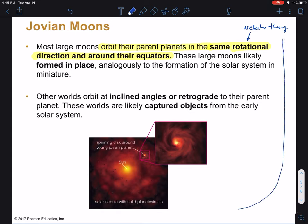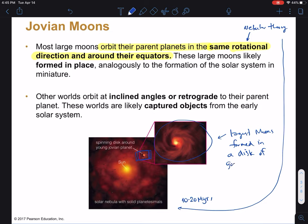You can see this picture showing the solar nebula with planetesimals forming around it. This would have been maybe about 10 to 20 million years after the sun formed. If we zoom in on this little box, we see a young Jupiter. And that Jupiter has a disk of gas and dust around it. So we think that these largest moons formed in a disk of gas and dust, just like the planets formed.